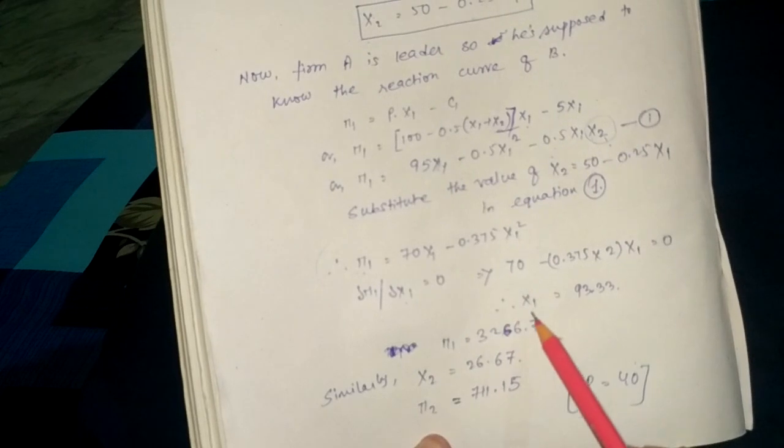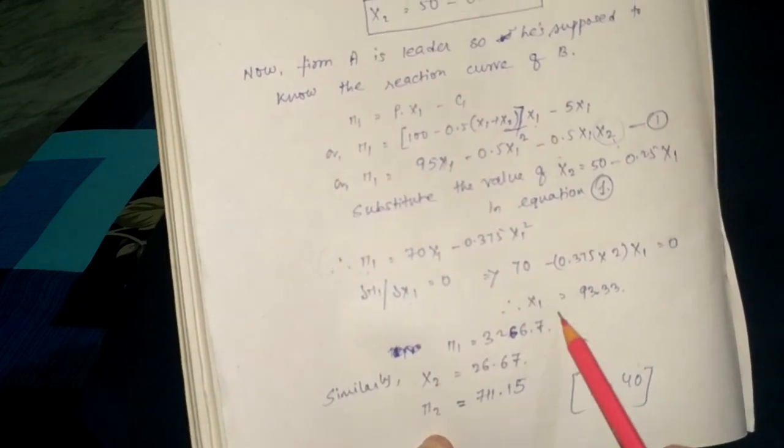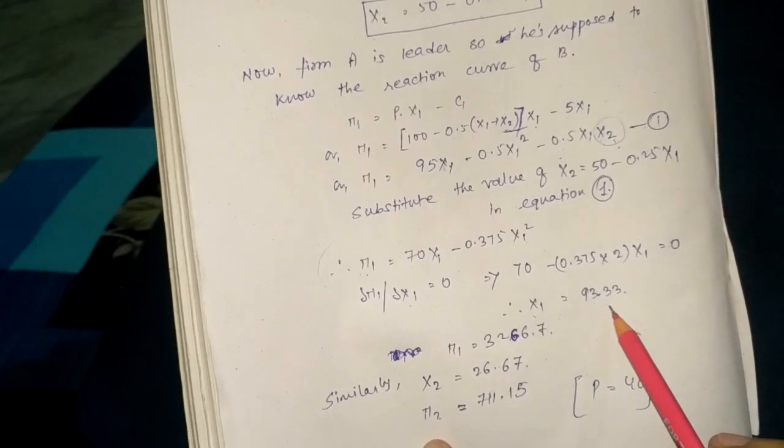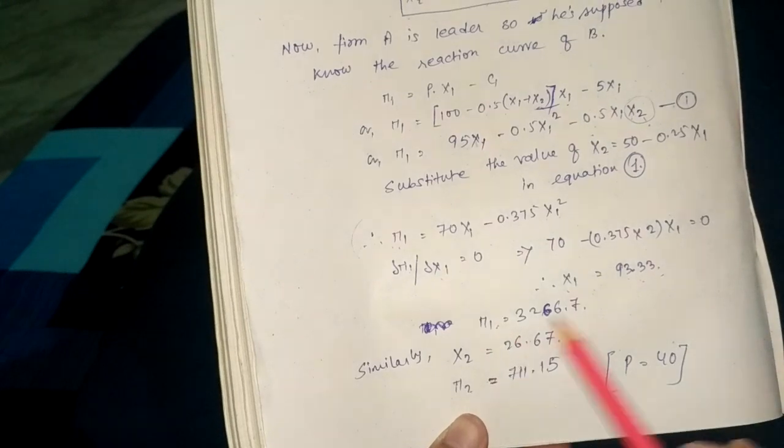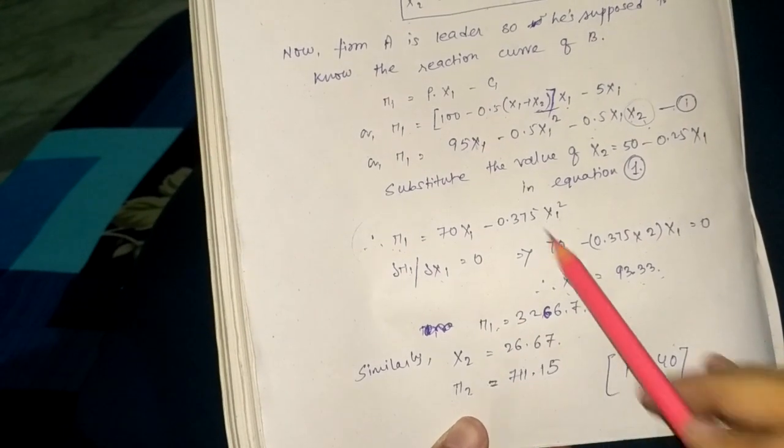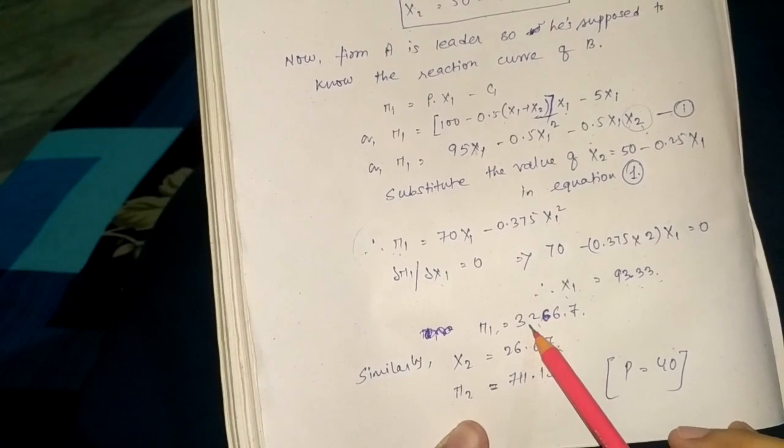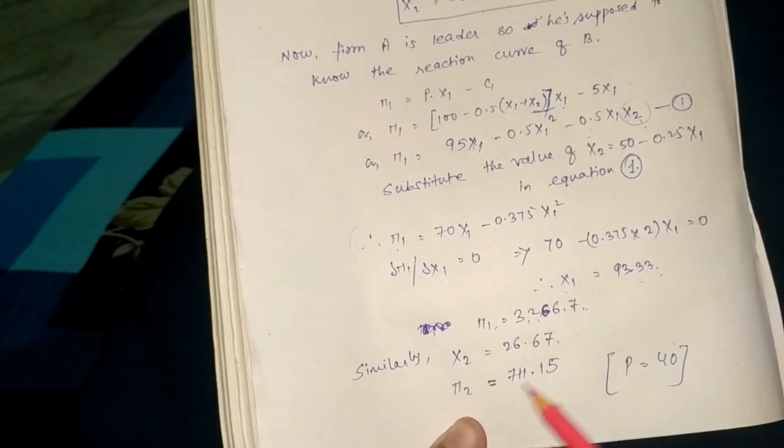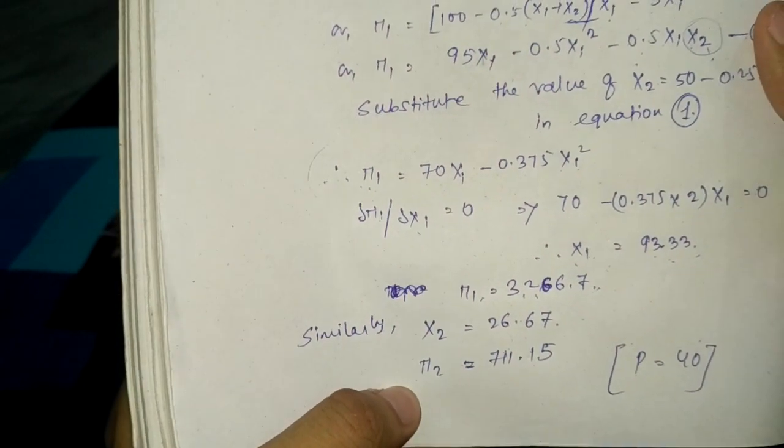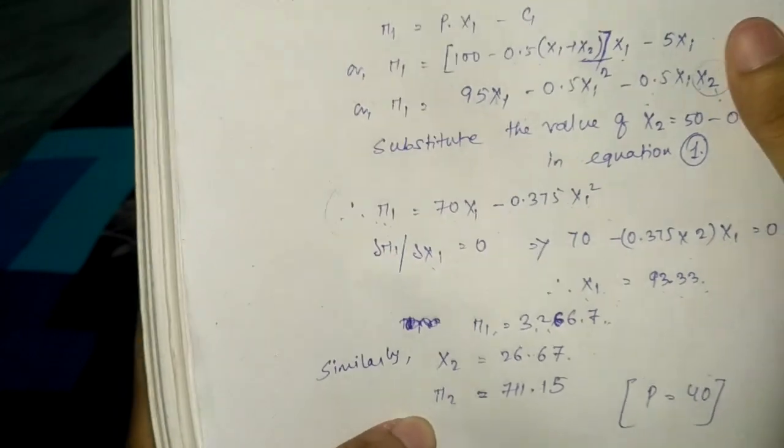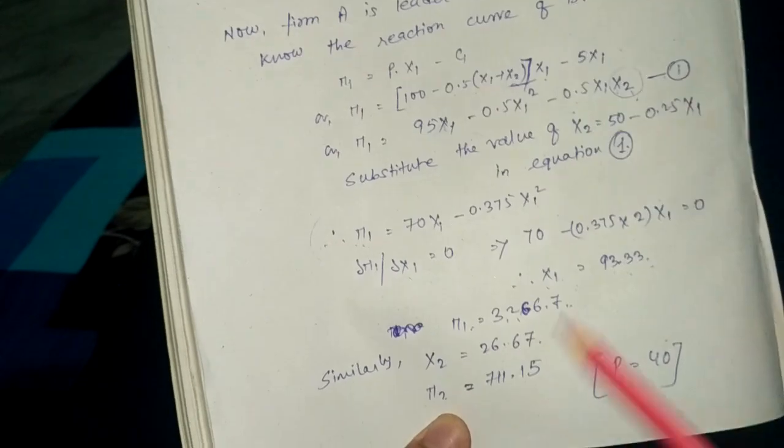From this we get to know the output of firm 1, which is 93.33. You can calculate it by yourself. Similarly, by putting the value of X1 in the profit equation we can find out the profit, and by similar process we know how to calculate output of firm 2 and profit for firm 2, just putting their values in the equations.